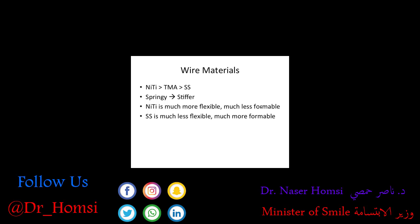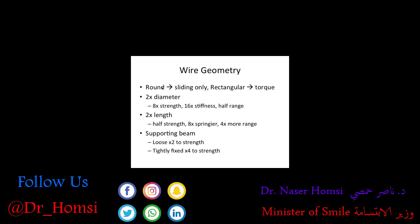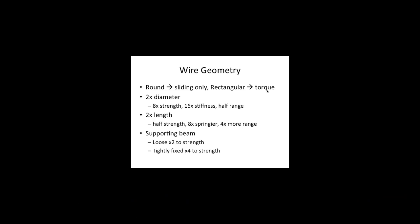NiTi can't be formed as easily — if you want to change its shape, it won't respond. Stainless steel will respond to your bends much better. For geometry: a round wire slides through brackets, whereas a rectangular wire in a rectangular bracket slot enables you to apply torque. If we double the diameter, we increase strength, increase stiffness, and halve the range of action. If we increase the length of something, we decrease strength, increase springiness, and increase range — thickening a wire makes sense that it becomes stronger and stiffer, and a longer wire makes sense that it has more range of flexibility.